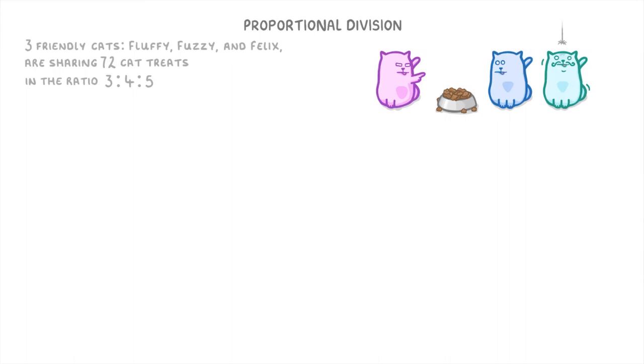Let's have a go at a slightly harder question this time. Three friendly cats, Fluffy, Fuzzy, and Felix, are sharing 72 cat treats in a ratio of 3 to 4 to 5. How many more treats will Felix get than Fluffy?